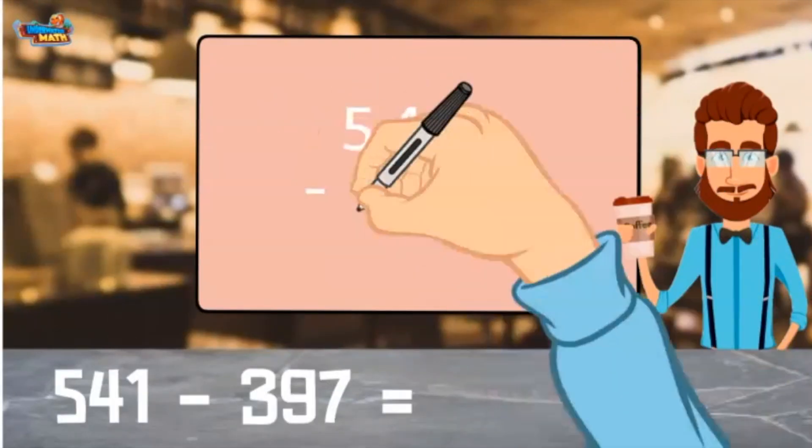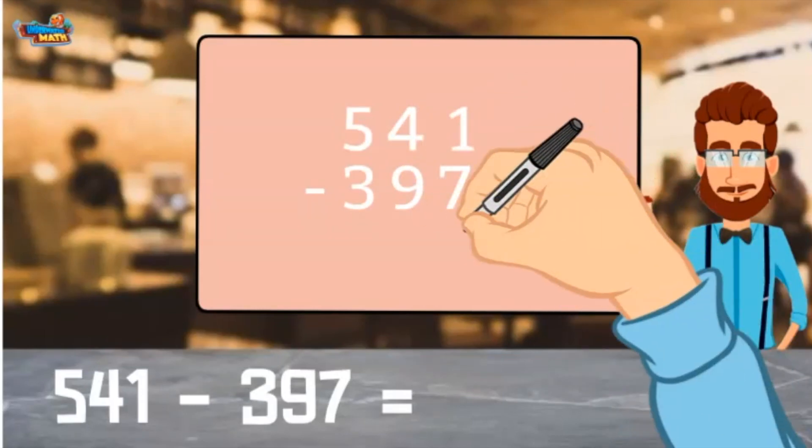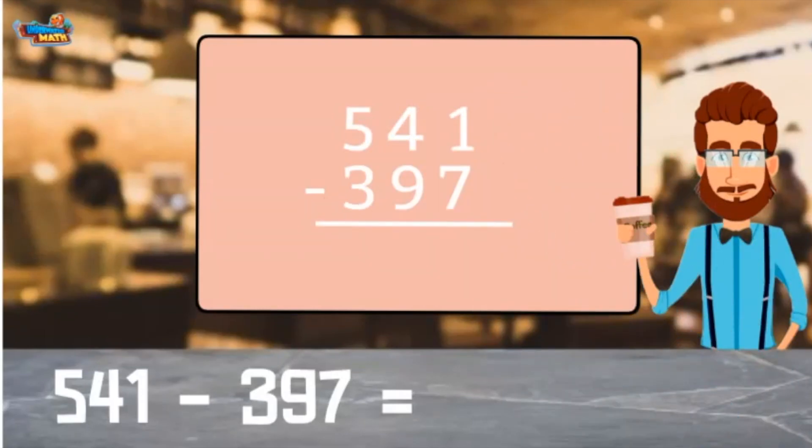We start by stacking the numbers on top of one another just like an addition. The larger number goes on top. Make sure to line up the place values as well.